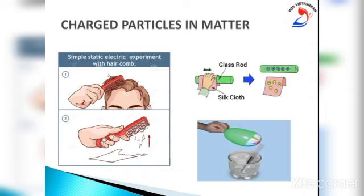Here we have an activity. If we rub a comb in dry hair, the comb attracts small pieces of paper. If we rub a glass rod with a piece of silk cloth and bring it near an inflated balloon, the glass rod attracts the balloon. An electrically charged object can attract an uncharged object. This means rubbing gives the comb and the glass rod an electric charge, telling us that some charged particles are present in the atoms of matter.